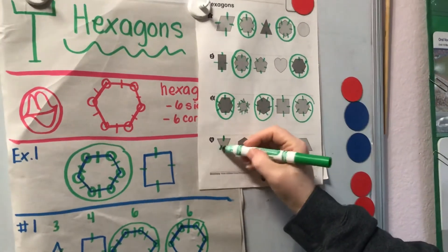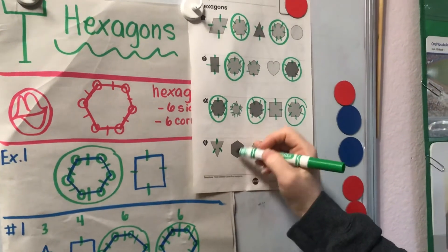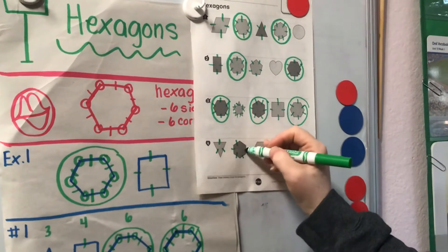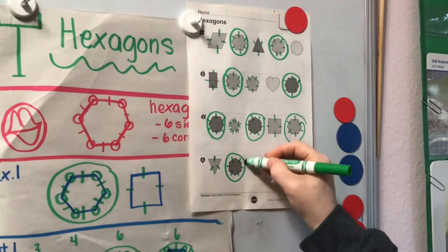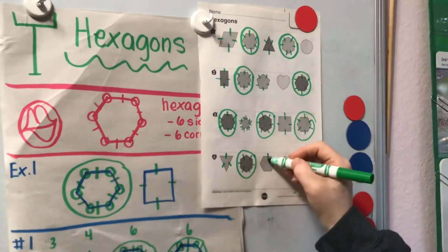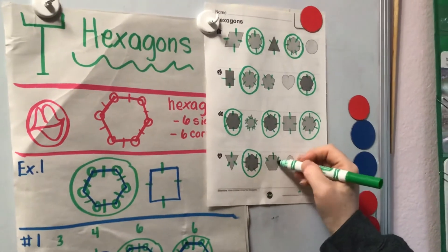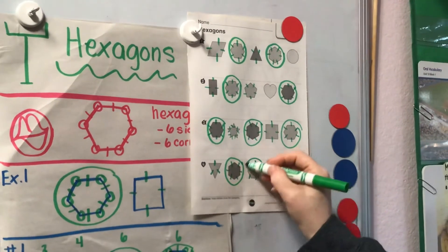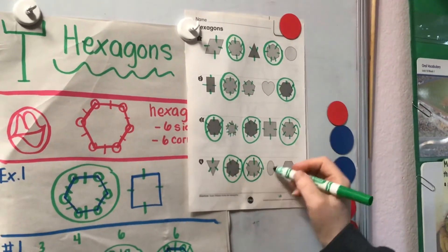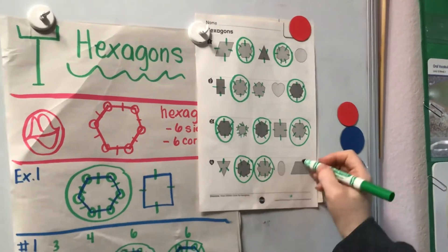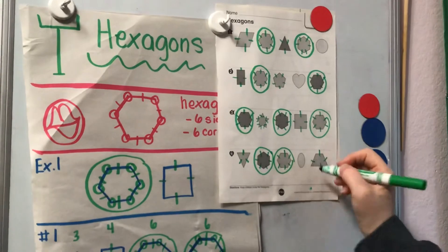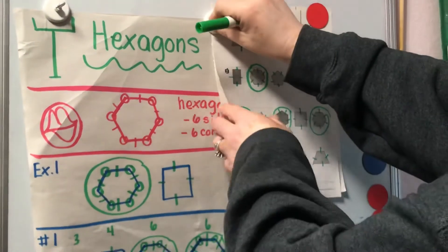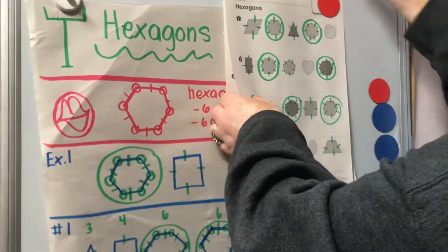One, two, three. One, two, three, four, five, six — hexagon. One, two, three, four, five, six — hexagon. Nothing. One, two, three, four. Wow! You did a lot of hexagons.